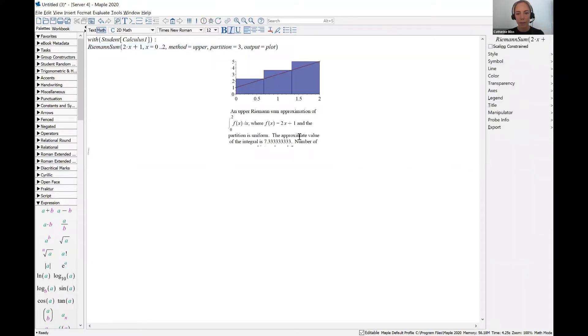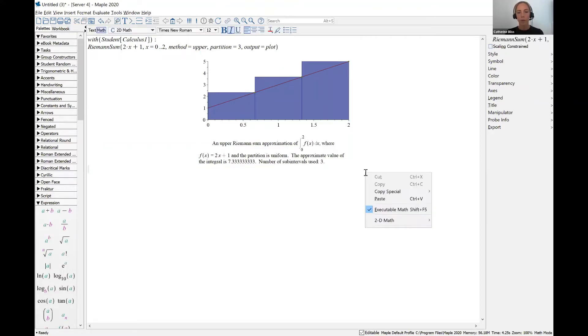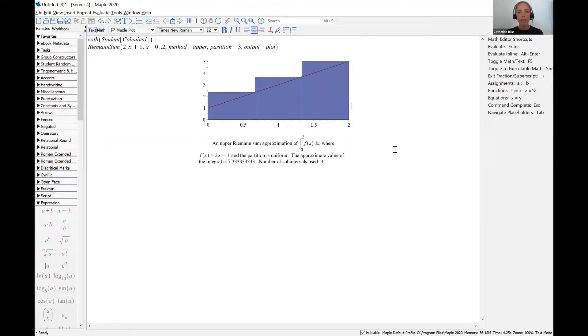So let's click on the plot and then use this bottom corner to drag out so that we can see more information. All right, so we have a nice little plot of our function. And we also are seeing the 3 rectangles. We see that these rectangles are using right-hand endpoints, and this was an overestimate of the area under the curve.